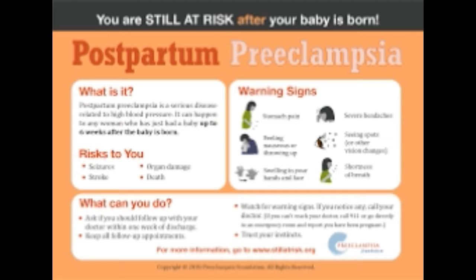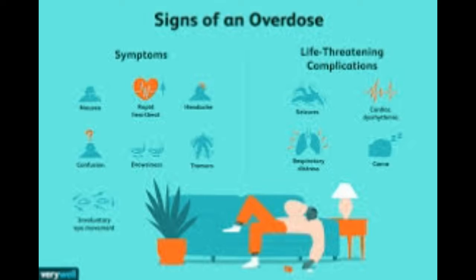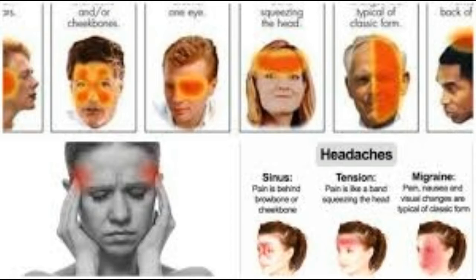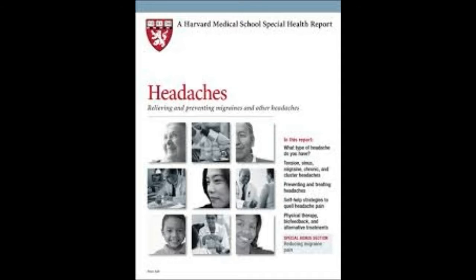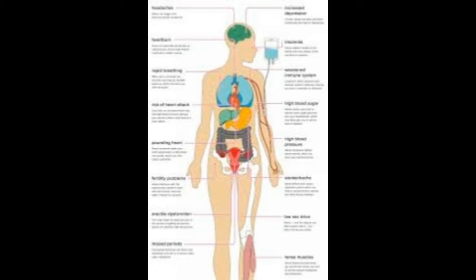If untreated, attacks usually last from 4 to 72 hours. A typical migraine attack produces throbbing pain on one side of the head, but it can be bilateral. The word migraine is derived from the Greek word hemicrania, meaning half of the head. Pain also sometimes spreads to affect the entire head. After a migraine attack, there is usually a post-drome phase in which patients may feel exhausted and mentally foggy for a while.